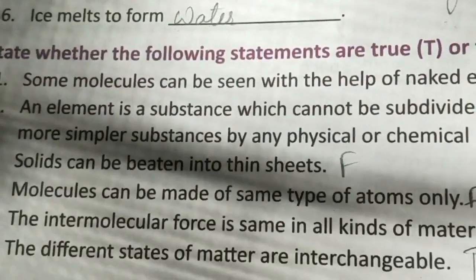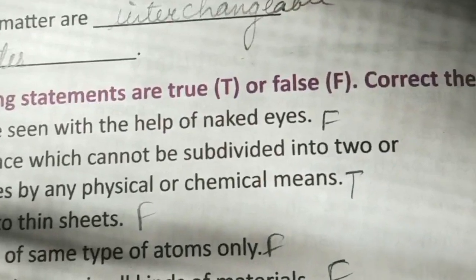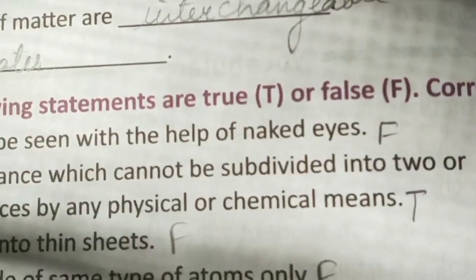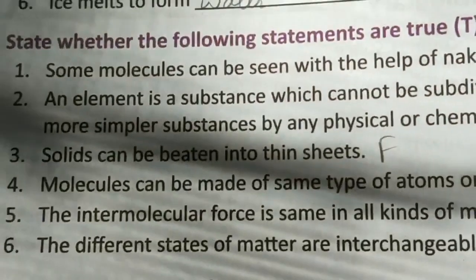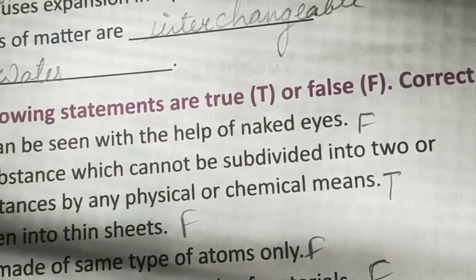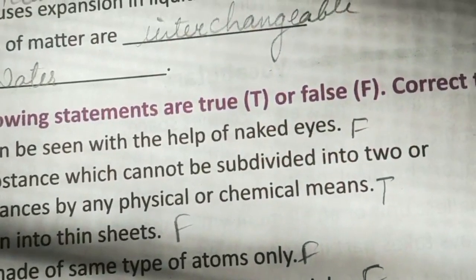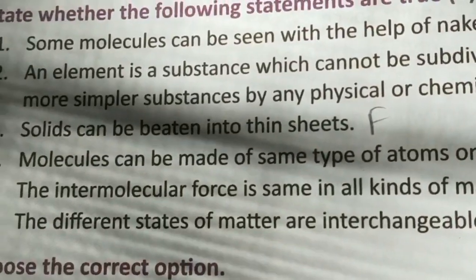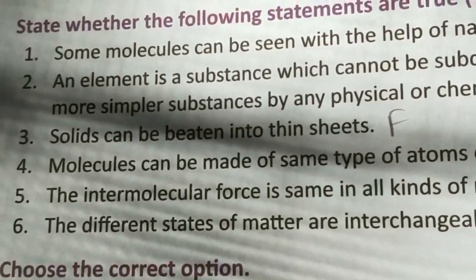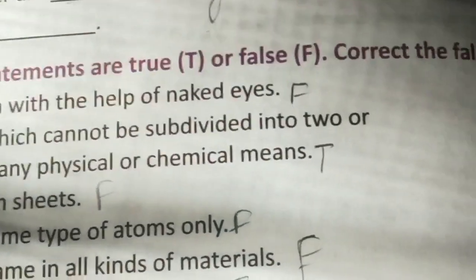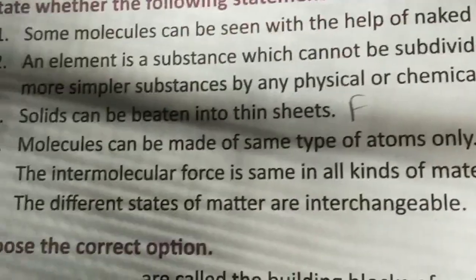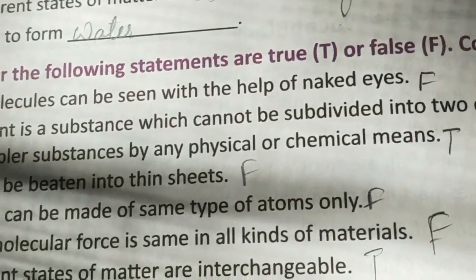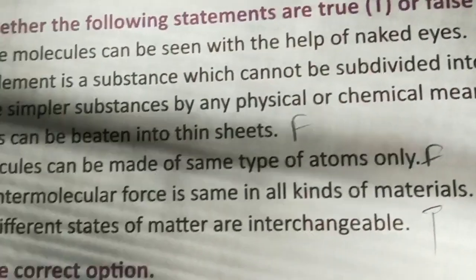Now let's see: state whether the following statements are true or false. Write T for true and F for false. First: some molecules can be seen with the naked eye — that's false, molecules are very small. Second: an element is a substance which cannot be subdivided into two or more simpler substances by any physical or chemical means — that's true.